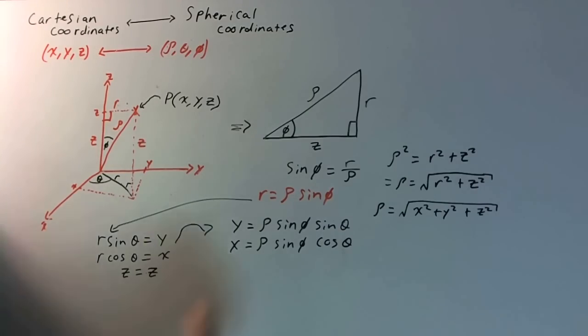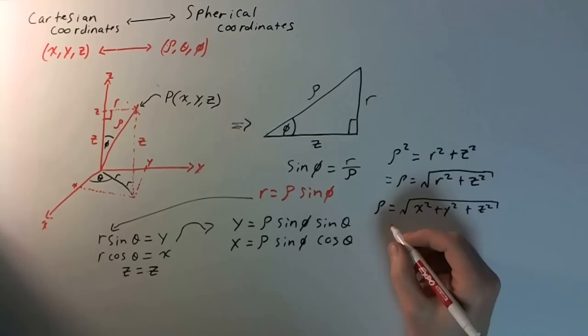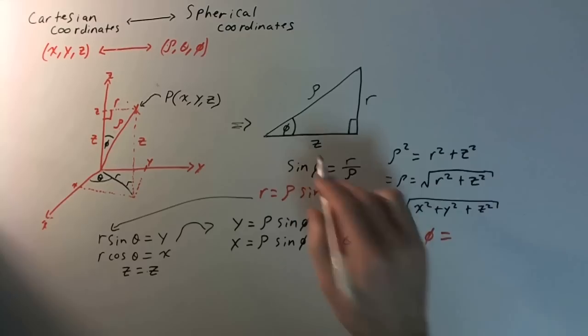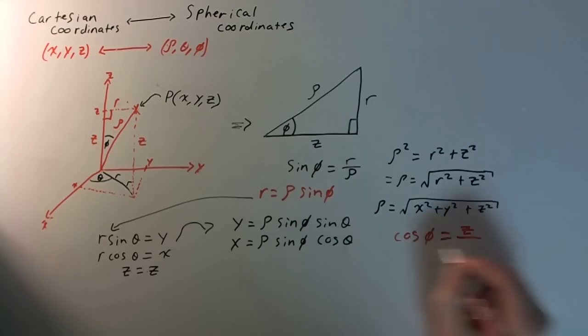Well, we need to solve for z here. So, we can use the fact that the cosine of phi is going to be equal to the adjacent over the hypotenuse. So, we know that cosine phi is going to be equal to the adjacent angle here, in this case z, over the hypotenuse rho.